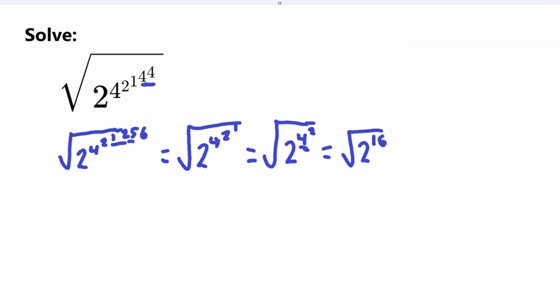We still have the square root to deal with. The square root of a number is equal to that number raised to the power of 1/2. So we can imagine the square root of 2 to the 16 as 2 to the power of 1/2, with the 1/2 replacing the square root, times 16. And 2 to the 1/2 times 16 means the exponent is simply 1/2 times 16, and half of 16 is equal to 8.